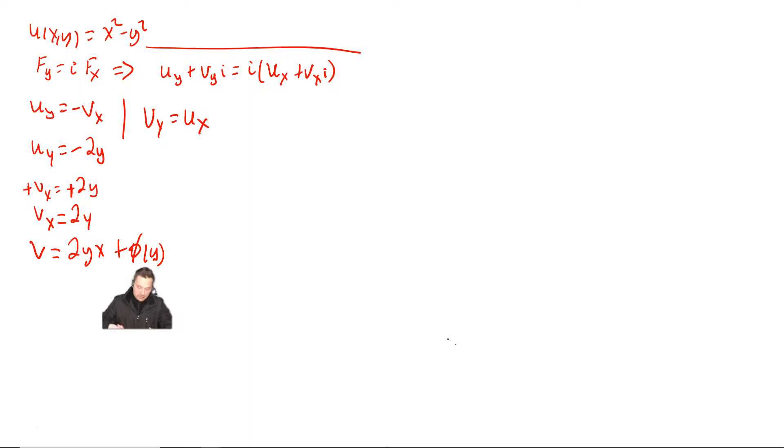Why do you have to attach that function of y at the end? Well, the reason is the following. If what you see above me were differentiated with respect to x, it would have to get back to that 2y. Well, the derivative of this function of y only, with respect to x, would vanish. And that's why you have to have it attached.